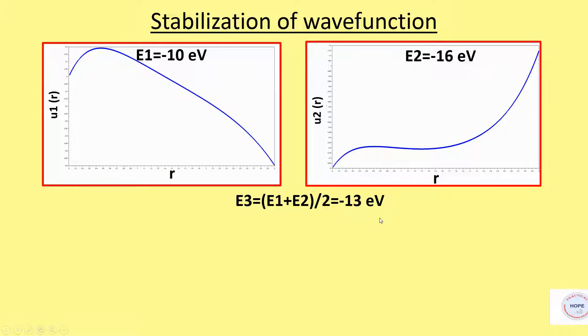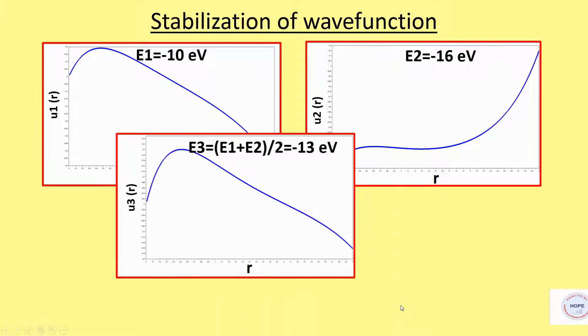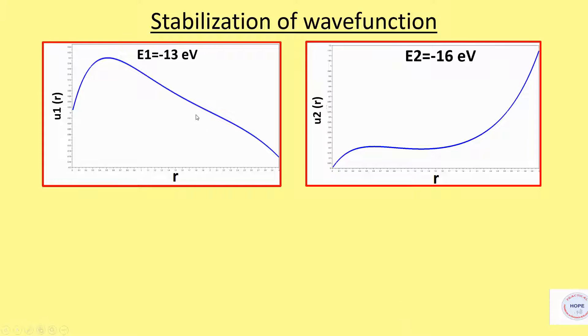Now we take E3 as the average of E1 and E2, that is minus 13 electron volts. For E3, the solution is approaching minus infinity. So we replace E1 by E3. Otherwise, we would have replaced E2 by E3. So now E1 becomes minus 13 electron volts. Now the solution lies between minus 13 and minus 16 electron volts.